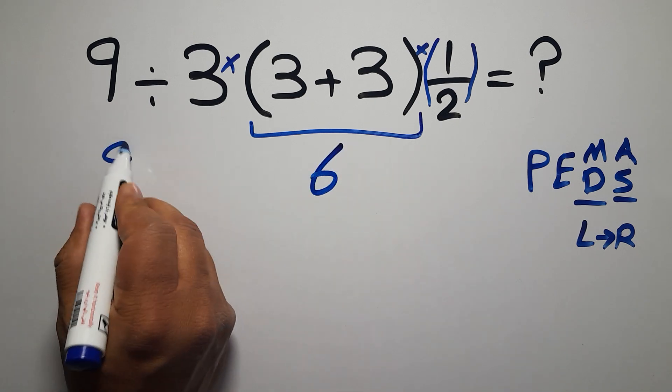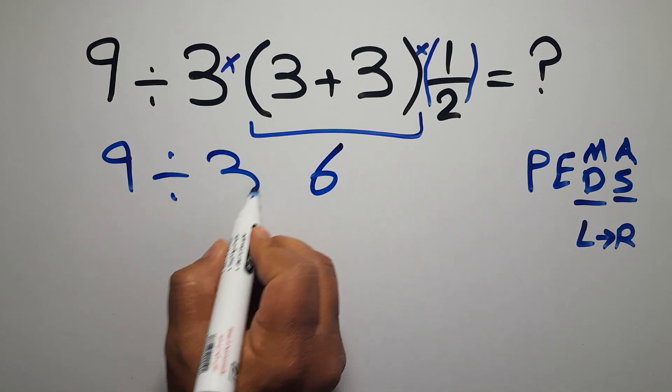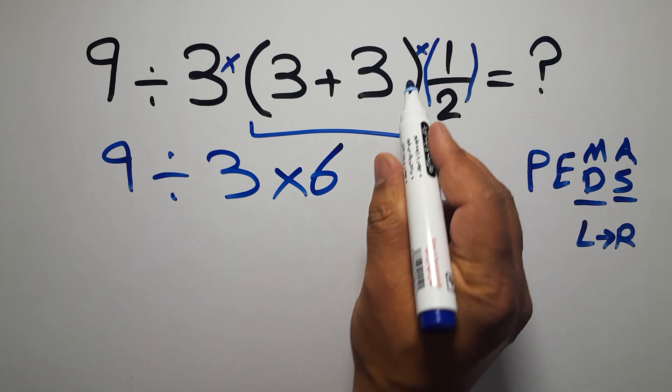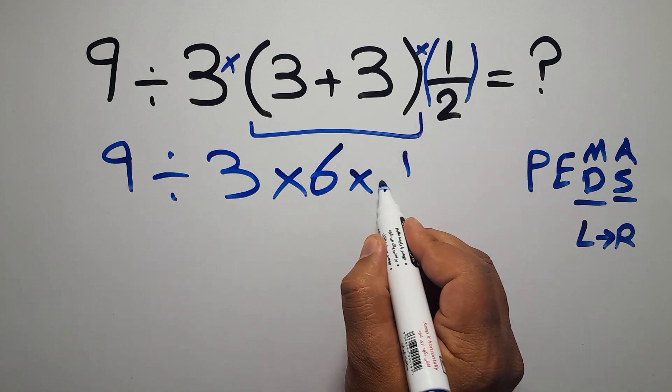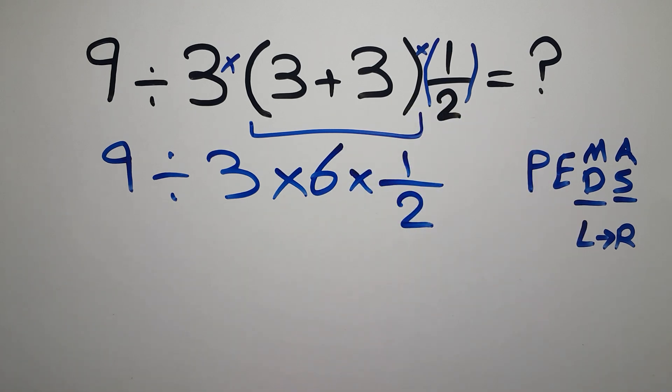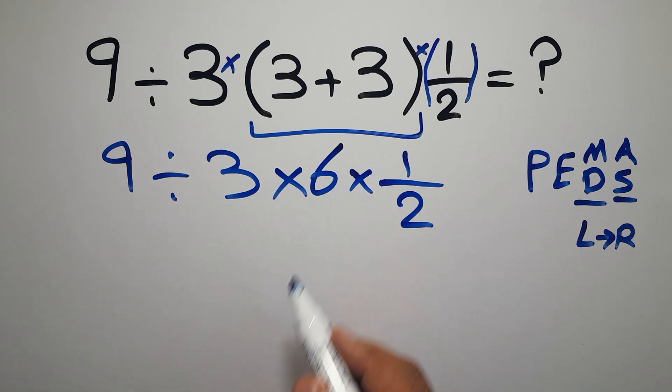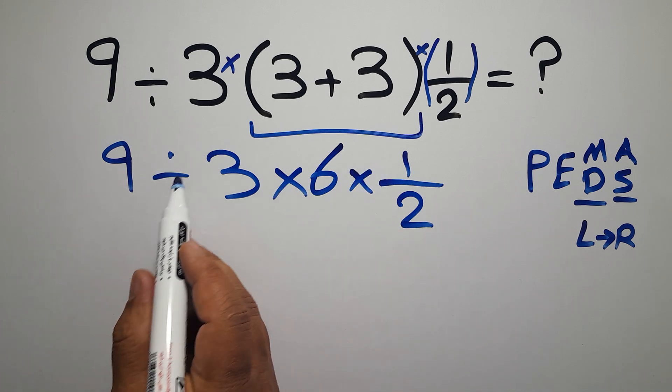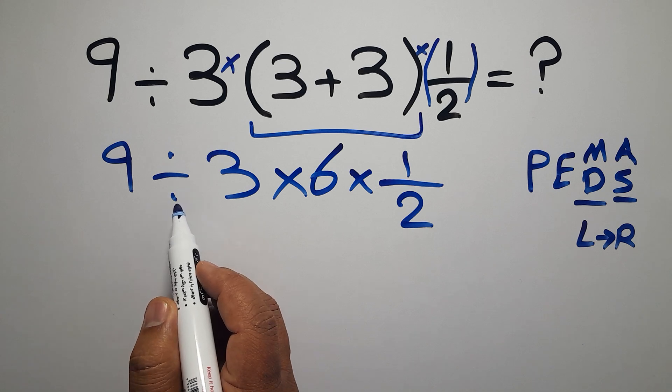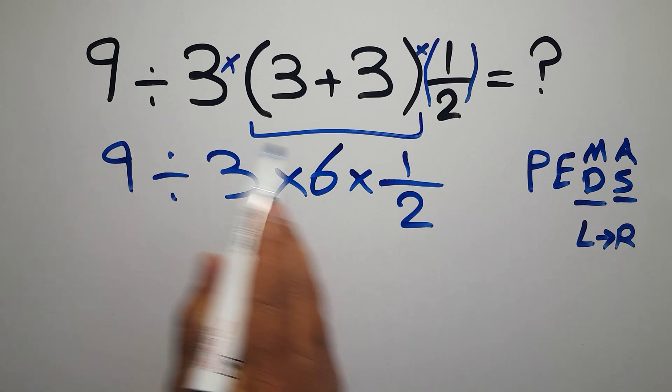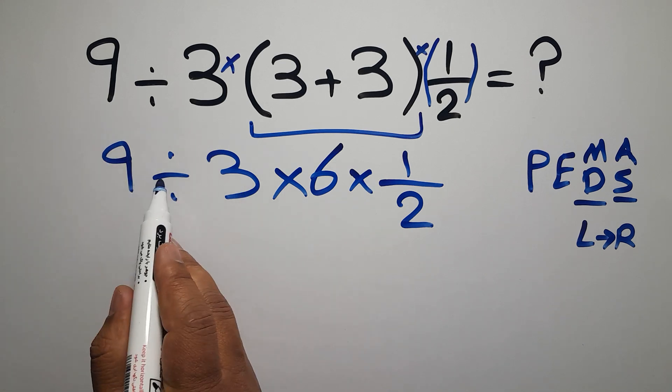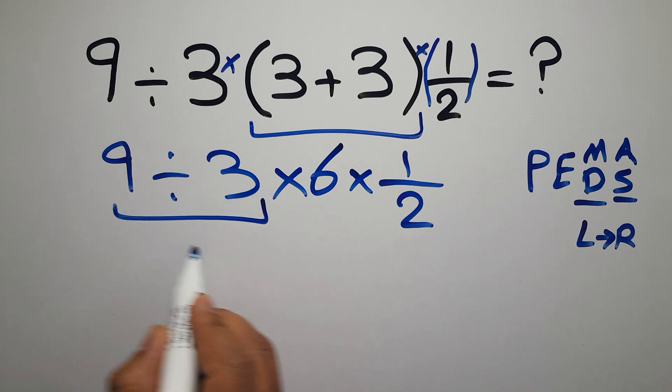So, we have 9 divided by 3 times 6, and times 1 over 2. Now, we have one division and two multiplications. First, we have to do this division, because we have to work from left to right. 9 divided by 3 gives us 3.